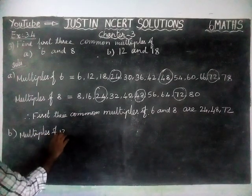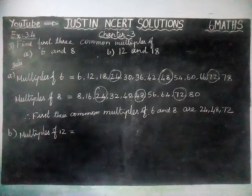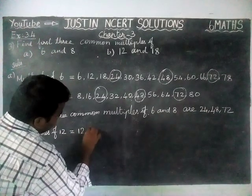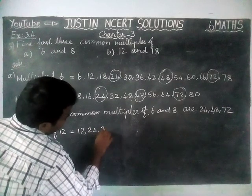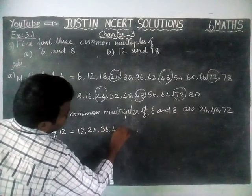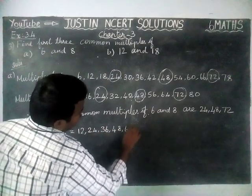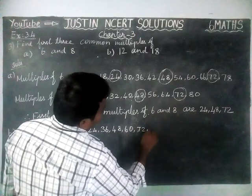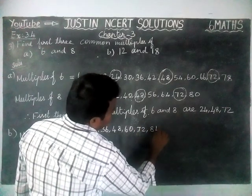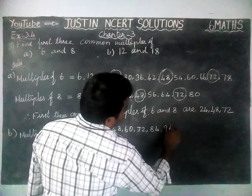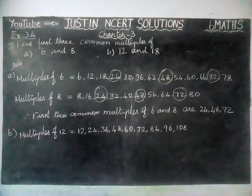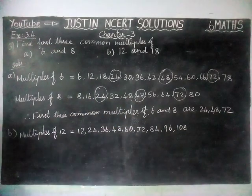Multiples of 12. Multiples of 12 is equal to the 12th table. We are going to write it: 12, 24, 36, 48, 60, 72, 84, 96, 108. Next, we will write it for 18.